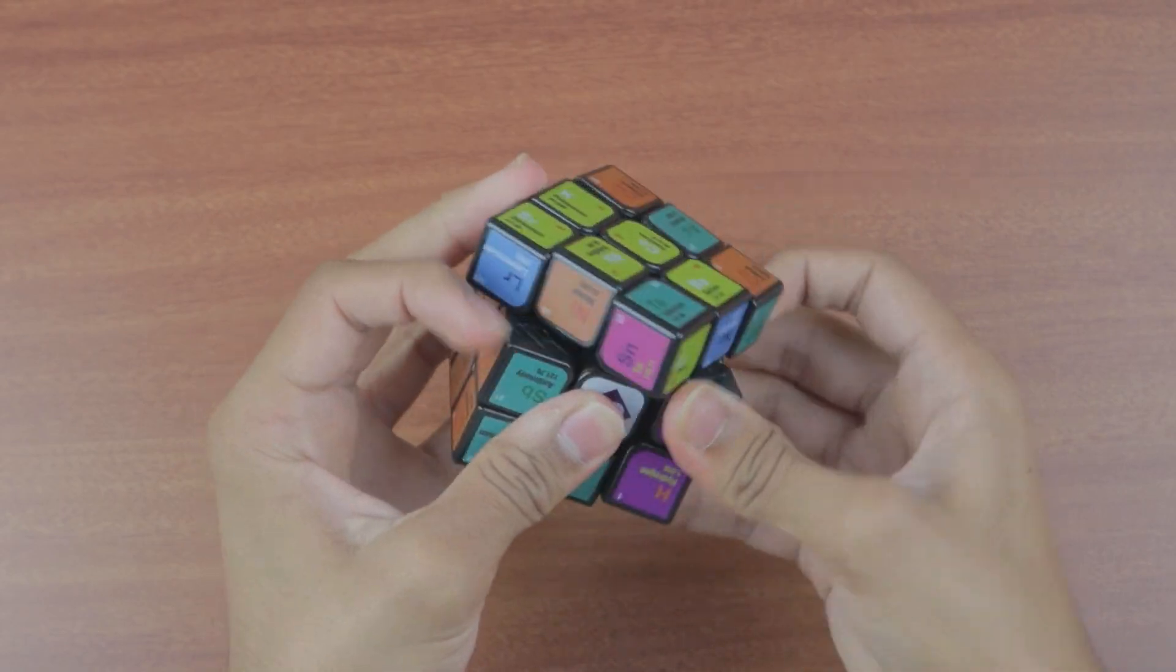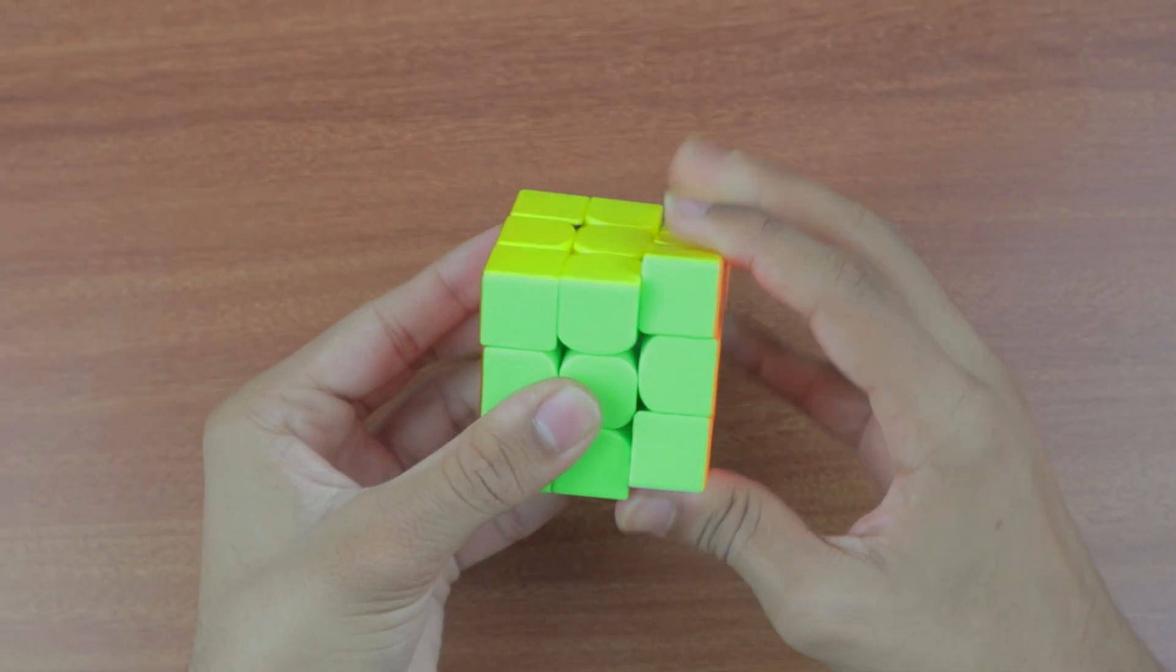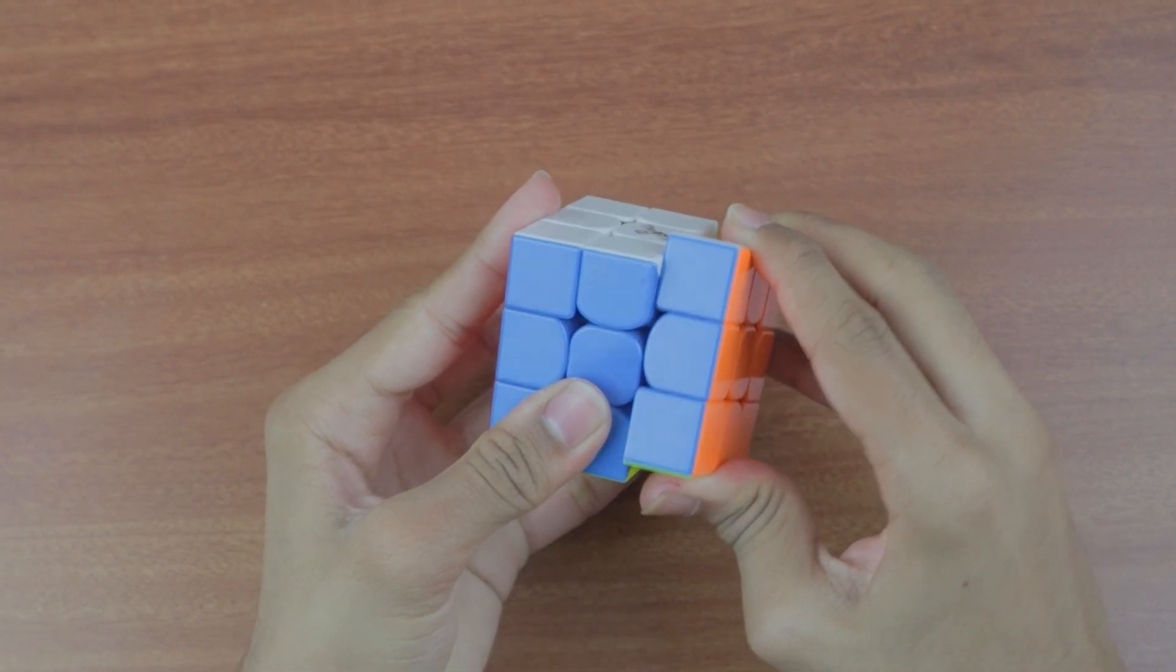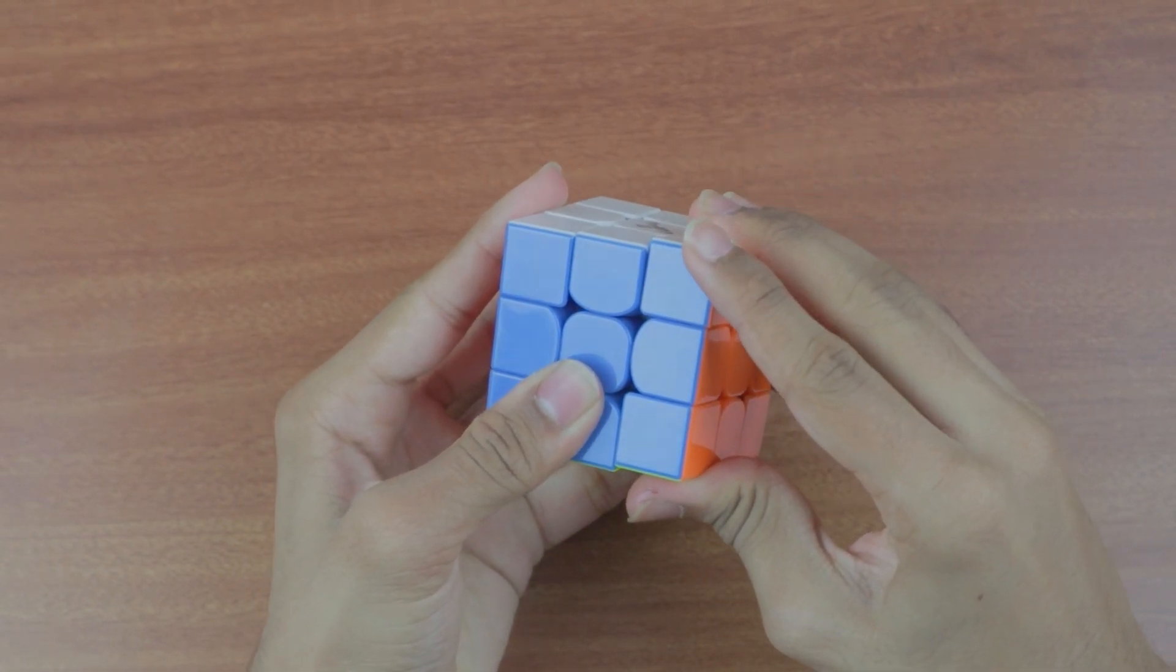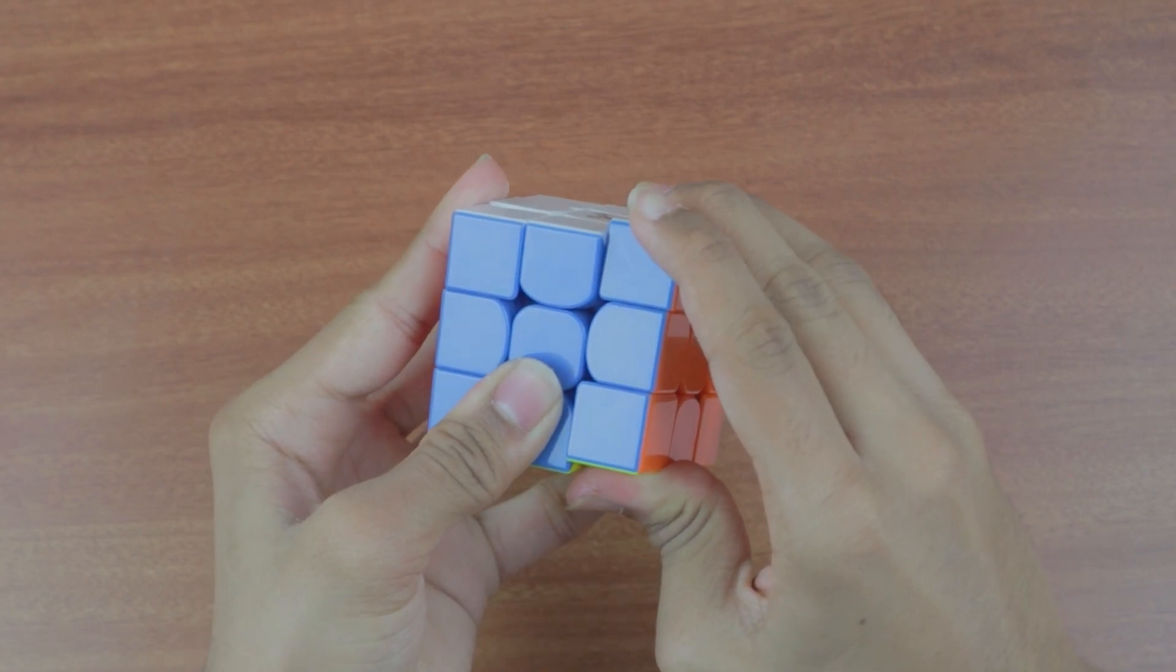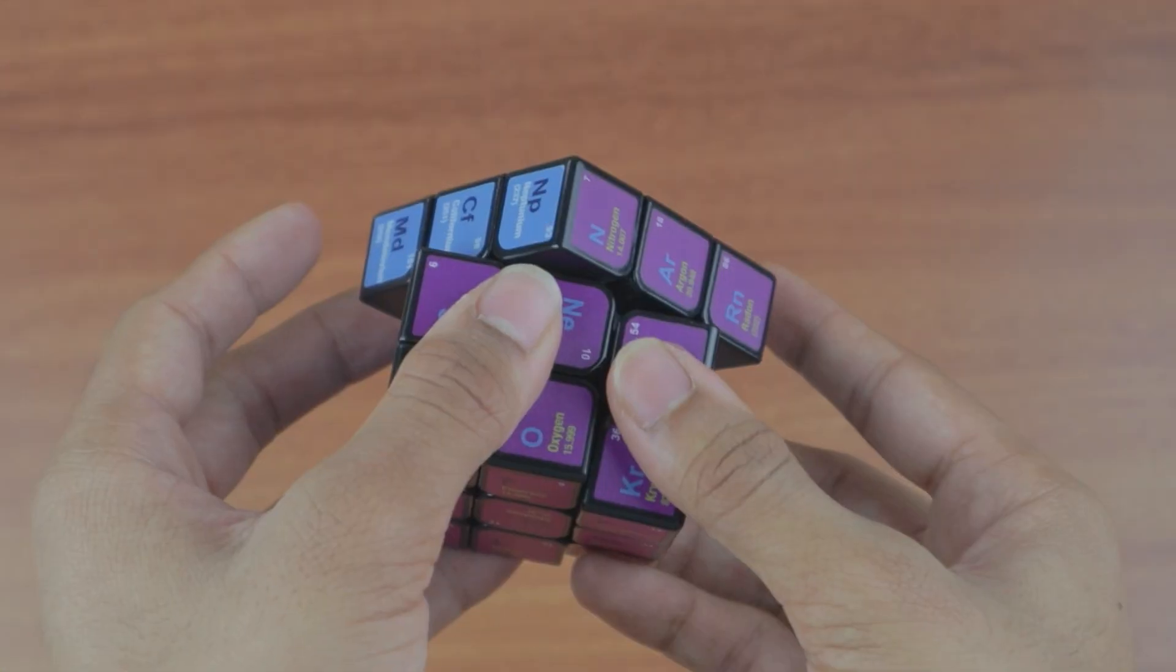The turning was extremely smooth and buttery. In fact, the puzzle was so smooth that when I attempted to turn my Volk Elite M, I was unable to turn it due to the sheer difference in friction.